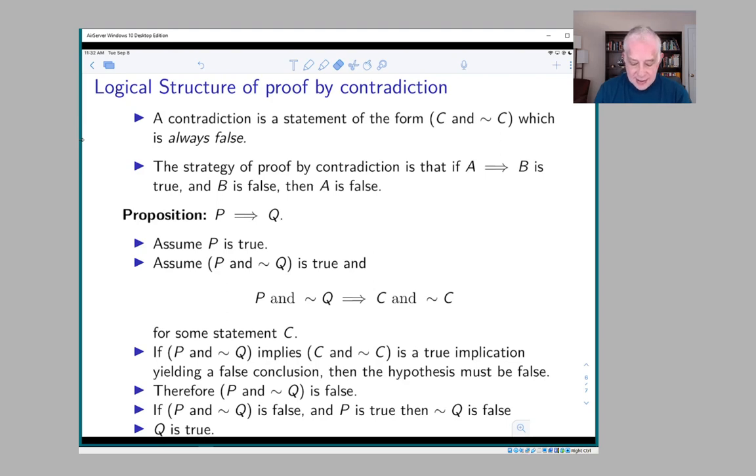And if you're trying to prove A implies B by contradiction, then the strategy is to use the fact that if A implies B is true and B is false, then A is also false.